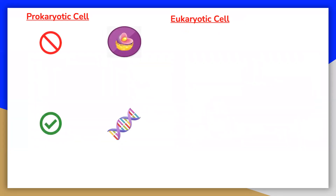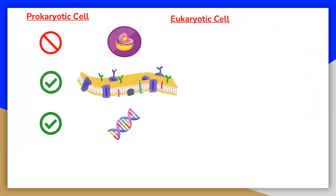Prokaryotic cells do not have a nucleus. Rather, they have a membrane-less nucleoid region that holds free-floating DNA. The entire DNA in a cell can be found in individual pieces known as chromosomes. Most prokaryotic cells consist of just one circular DNA. Prokaryotic cells have a plasma membrane that separates the cell from the surrounding environment. The ribosomes in prokaryotic cells are scattered and floating freely throughout the cytoplasm, and also have smaller subunits.